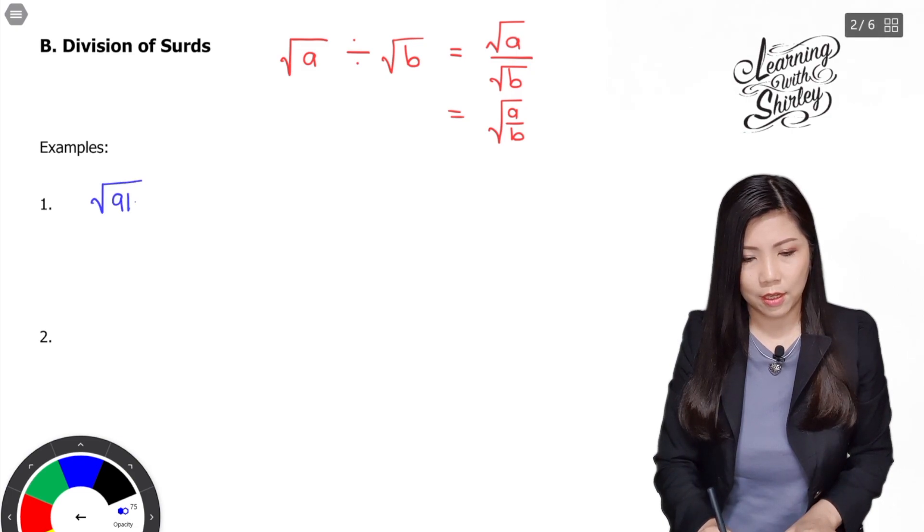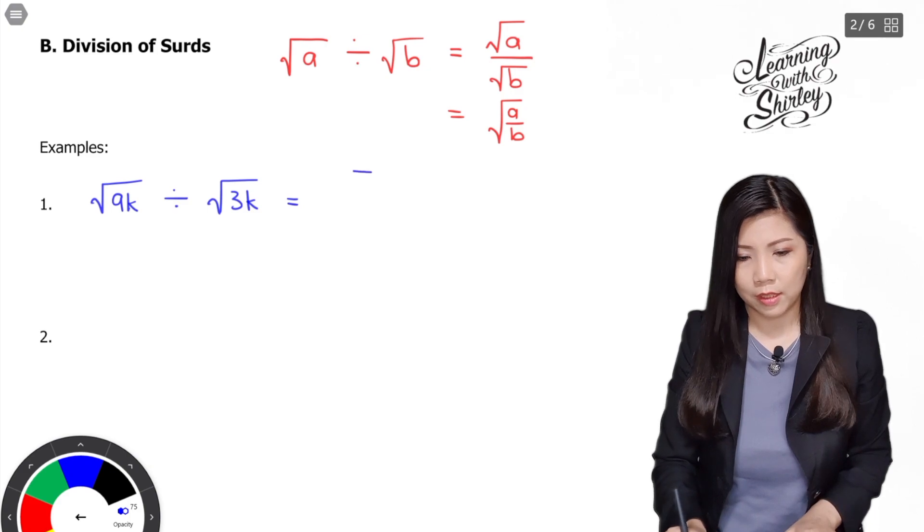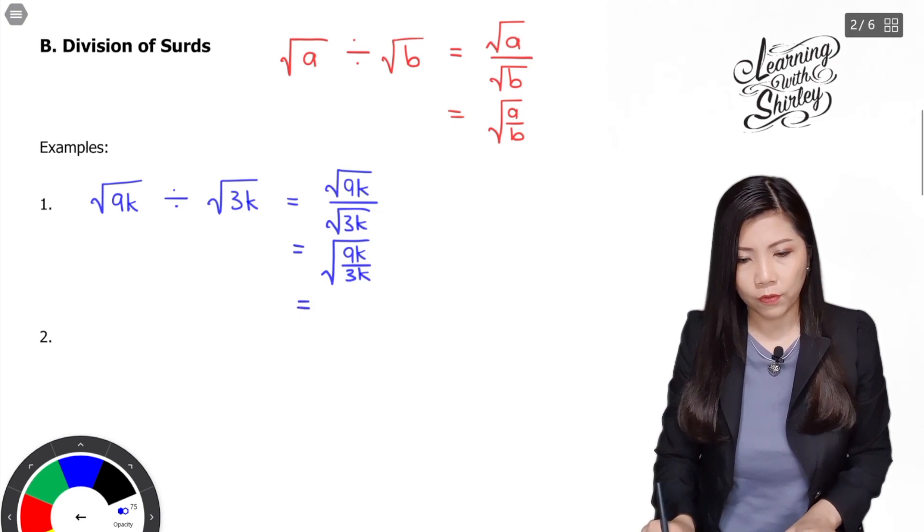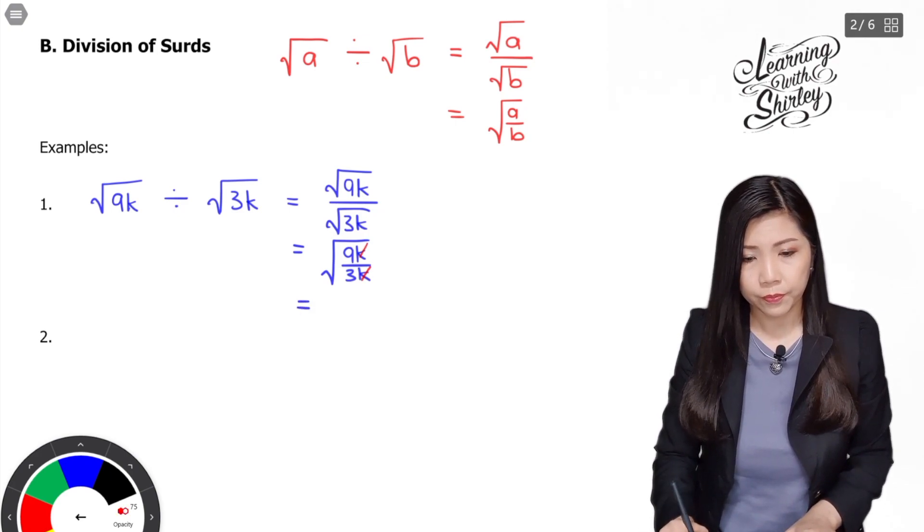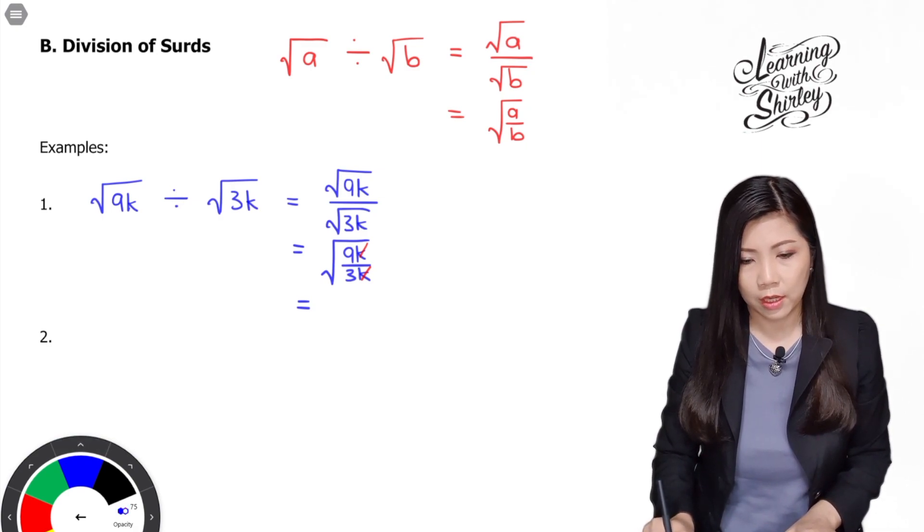Surd 9K divided by surd 3K is equal to surd 9K over surd 3K. Then we can combine under one surd: 9K over 3K. Then we can cancel off the K, cancel top and bottom. So 9 divided by 3 is 3, and it's surd 3.